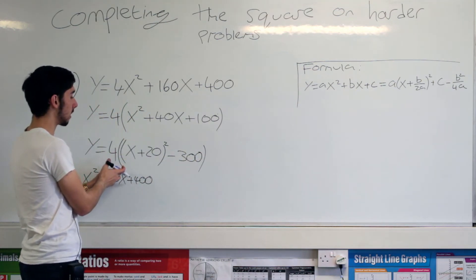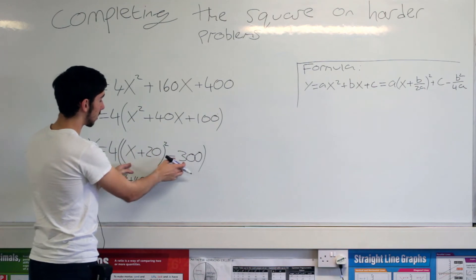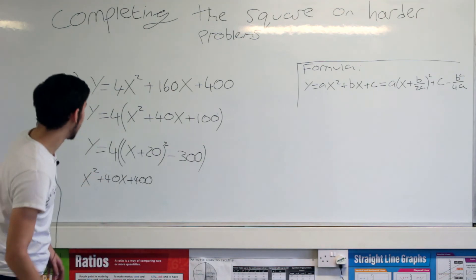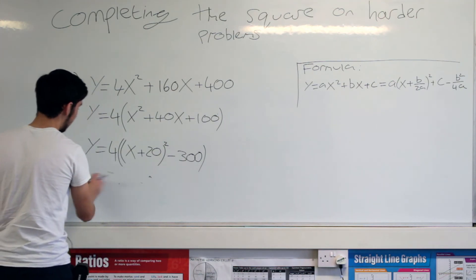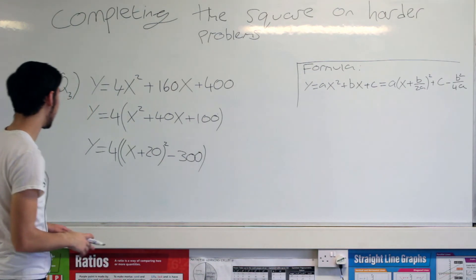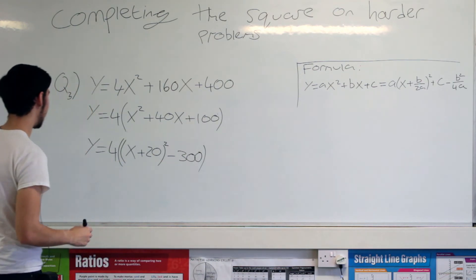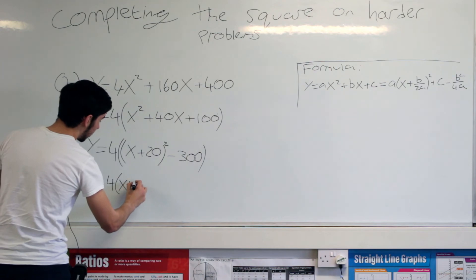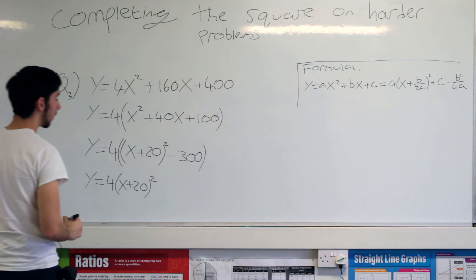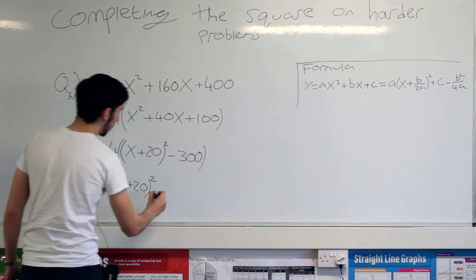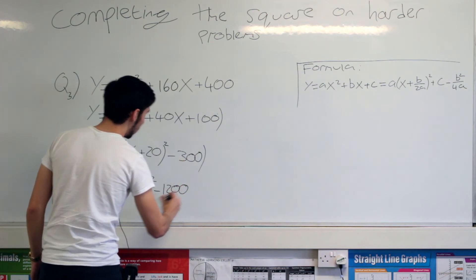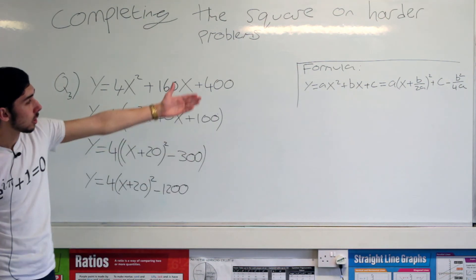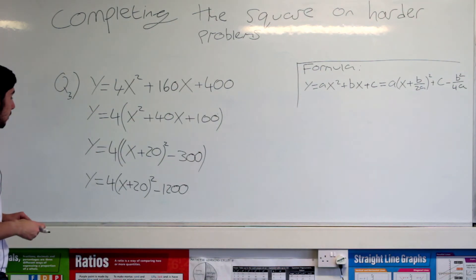So the reason why I wrote a double bracket here is because we've now got brackets inside more brackets. Everything is being times by four. Okay. Now we can expand this out and we can say y is equal to four times x plus 20 squared minus 1,200. And look at that. The square is being completed. Don't believe me? Check it using the formula and that is it.